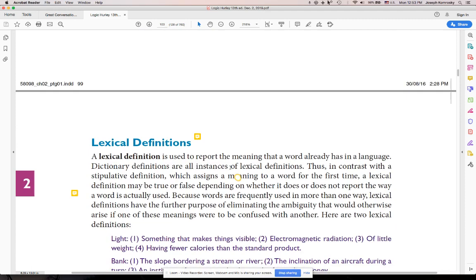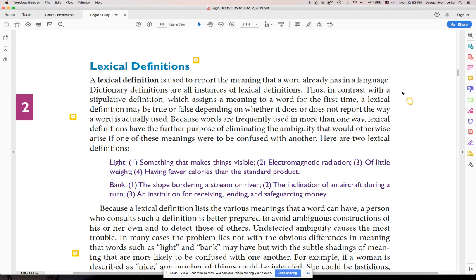Lexical. Lexical definition is used to report the meaning that a word already has in a language. Dictionary definitions are all instances of lexical definitions. Lexical are really good because what they're doing is they're avoiding ambiguity. Ambiguity, you've already learned, is you can use a word can be defined in at least two different ways.